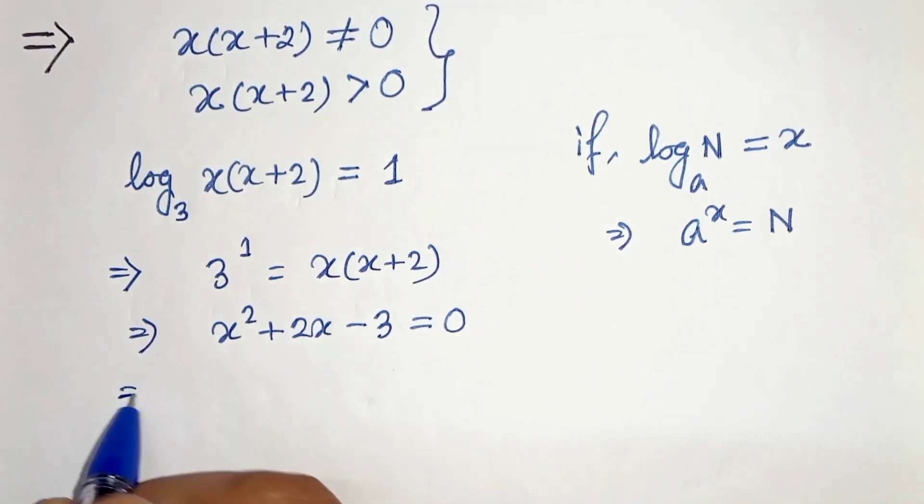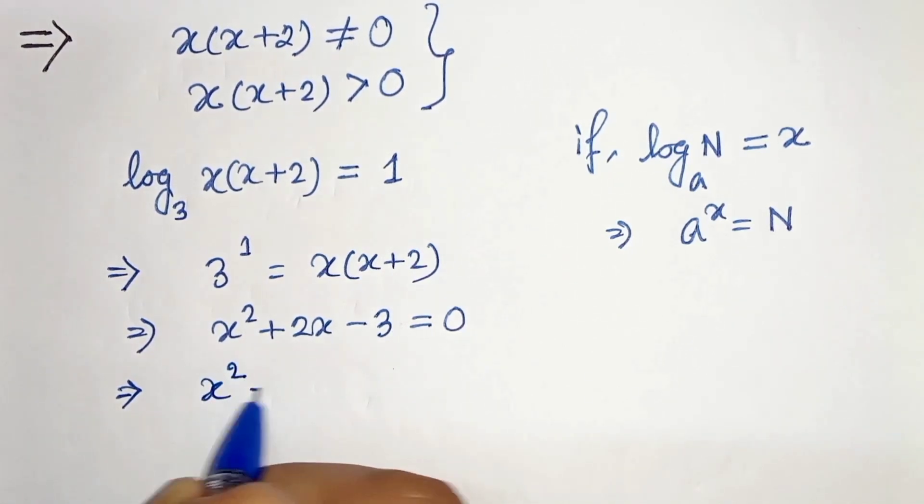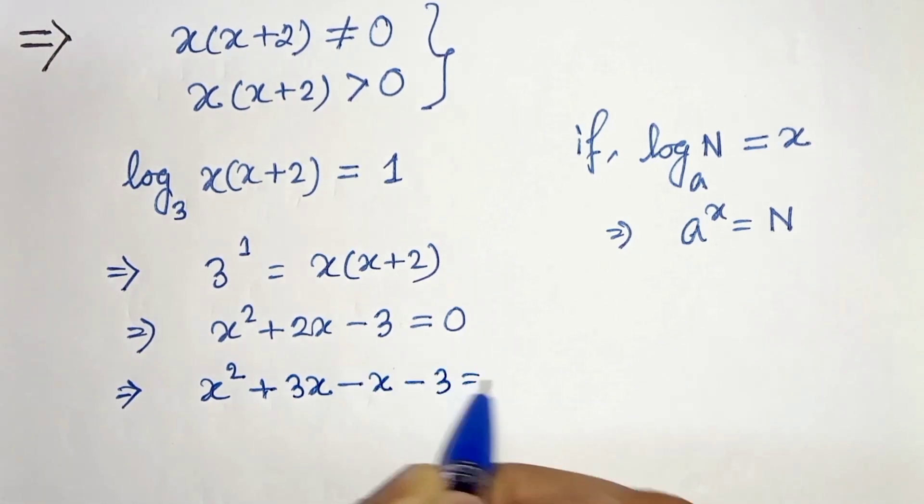Now we have to find the factors. Here our product is minus 3 and the sum is plus 2. So we will take x squared plus 3x minus x minus 3 equals 0.